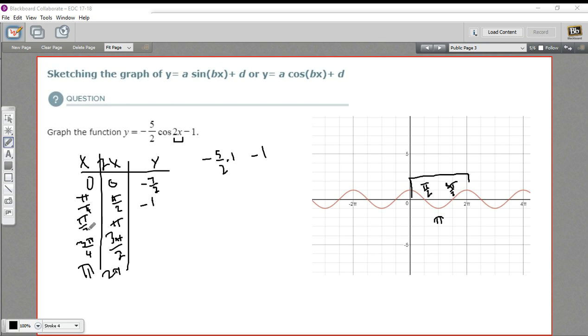And now we can put in π over 2. Multiply that by 2. We get π. The cosine of π is negative 1. So this is going to be negative 5 halves times a negative 1, and then minus 1. So negative 5 halves times a negative 1 is a positive 5 halves. So 5 halves minus 2 halves is a positive 3 halves.